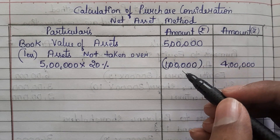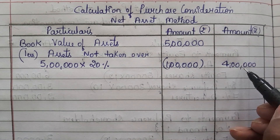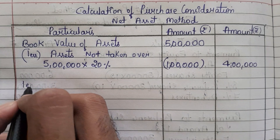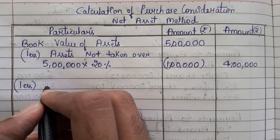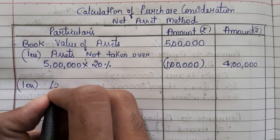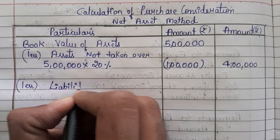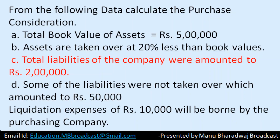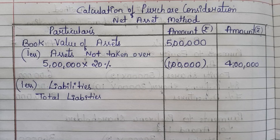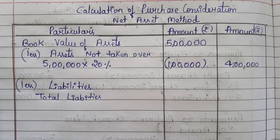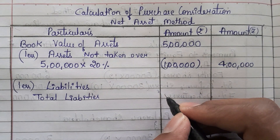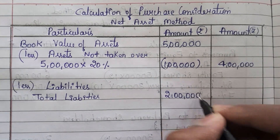Out of 5 lakh, 1 lakh they are not taking, so they are taking only the remaining 4 lakh. The next step is to subtract the total value of liabilities from the value of assets. The total liabilities given in the question — see part C — the total liabilities of the company were amounted to rupees 2 lakh. Write that 2 lakh in the inner column.